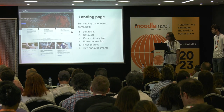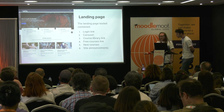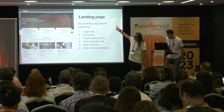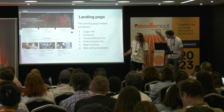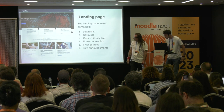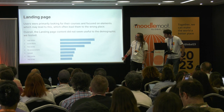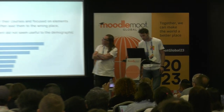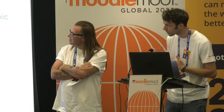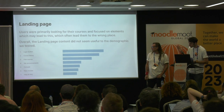So, scores on the doors. Landing page — we tested the initial design, which contained a login link, carousel, course library link, free courses link, new courses, and site announcements. Users were primarily looking for their courses and focused on elements they thought would lead there, but they often went to the wrong place. For example, they clicked the course library, but that was a library of all 5,000 UCL courses — not their enrolled courses. So we had to rethink this. Key takeaway: login link and get to courses — that's it.